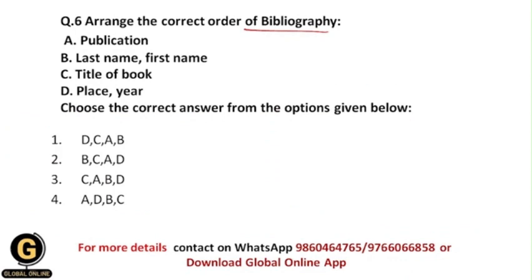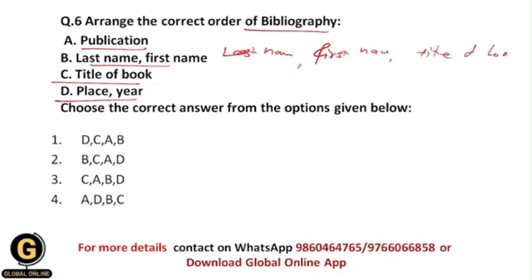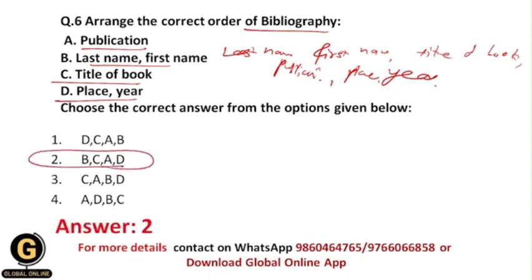Question 6: Arrange the correct order of bibliography. The same rule applies when writing bibliography: write the last name of the author, then the first name, then the title of the book, then the publication, then the place, and then the year. The correct answer is option 2, because B comes first — last name and first name of the author — then title of the book, then publication, and then place and year.